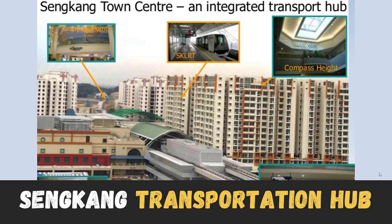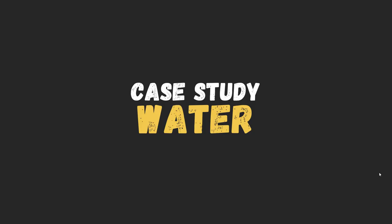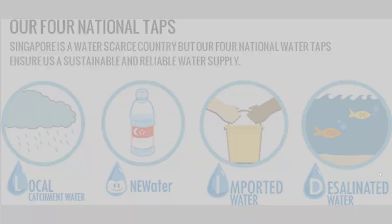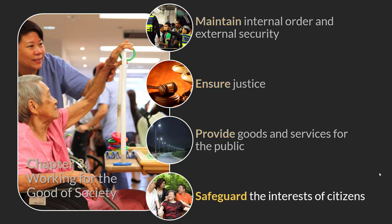Water is very important for Singapore. Without water, a crisis could arise, and Singapore is scarce in water resources. Singapore has four national taps to ensure a sustainable and reliable water supply: local catchment areas such as MacRitchie Reservoir; NEWater, which is recycled water; imported water from Malaysia; and desalinated seawater, making it drinkable. These four taps together ensure Singapore's water security.